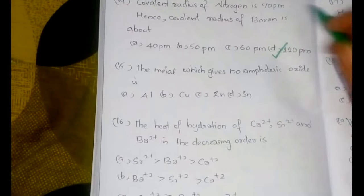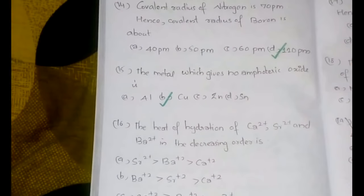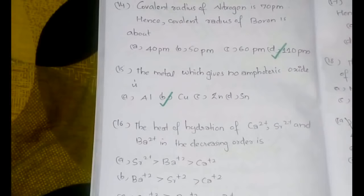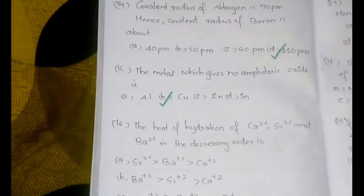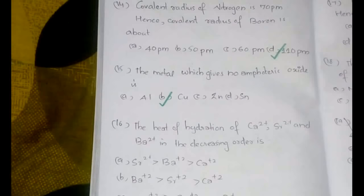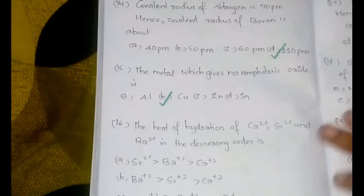The fifteenth question: the metal which gives no amphoteric oxide is option B, copper. Amphoteric means it can show both acidic and basic nature, and the oxide of copper does not show such behavior.